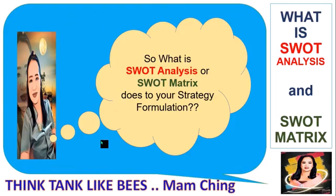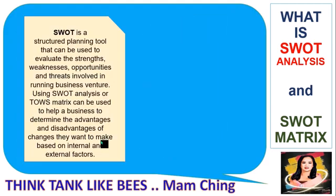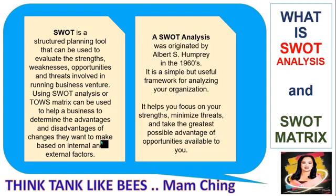So what does SWOT analysis, or the SWOT matrix, do for your strategy formulation? SWOT is a structured planning tool that can be used to evaluate the strengths, weaknesses, opportunities, and threats involved in running a business venture. Using SWOT analysis or the TOWS matrix can help a business determine the advantages and disadvantages of changes they want to make, based on internal and external factors.